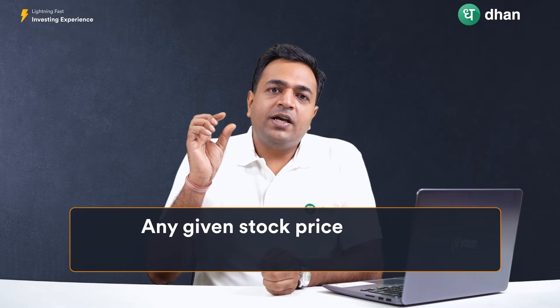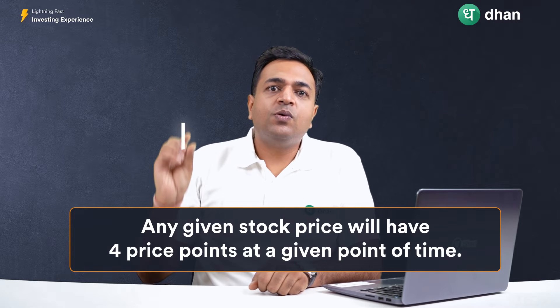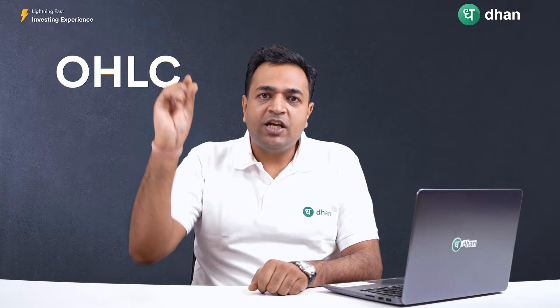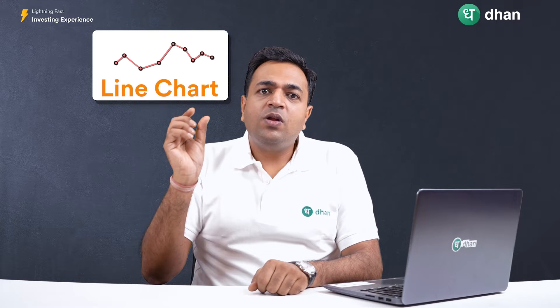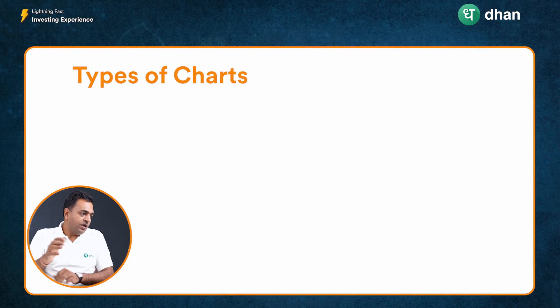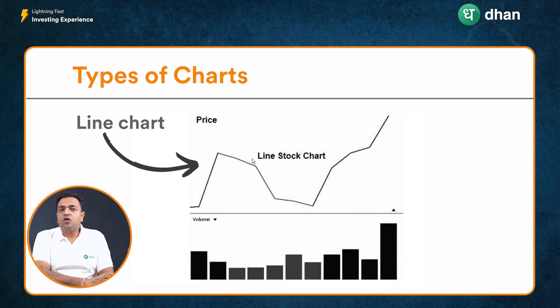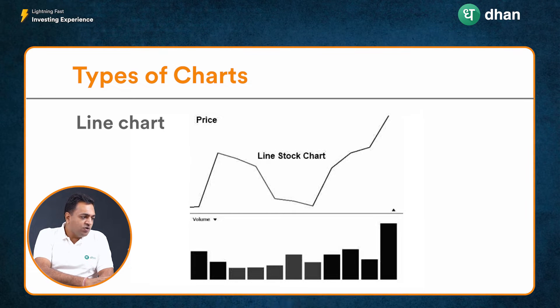Any given stock price will have four price points at a given point of time — an open price, a high price, a low price and a close price, typically referred to as OHLC. When it comes to a line chart, you will be using any one of these four price points to plot your price movement, and by default it is the closing price. This line chart helps you determine the overall trend of the stock price movement, conveying only one price point, and is useful to identify trends.